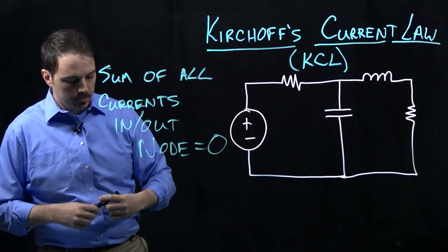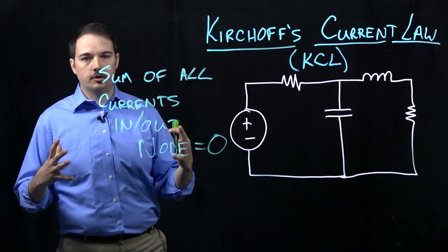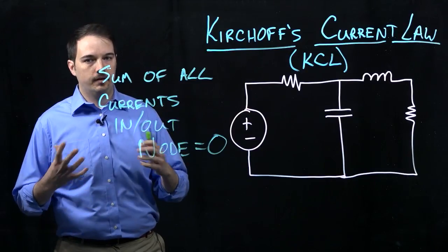If we look at any specific circuit diagram and look at a specific node, we have to be able to add up all the currents that are coming into or out of that node and they have to be equal to zero.